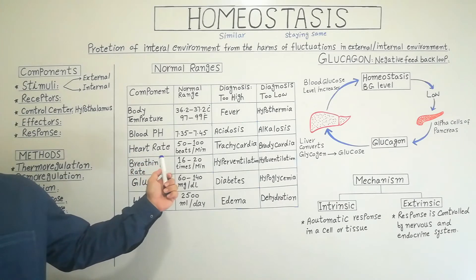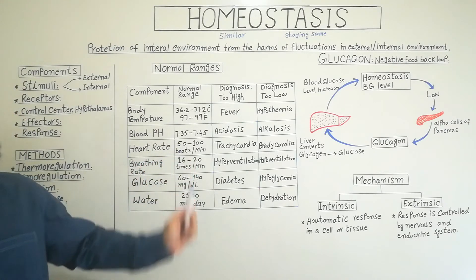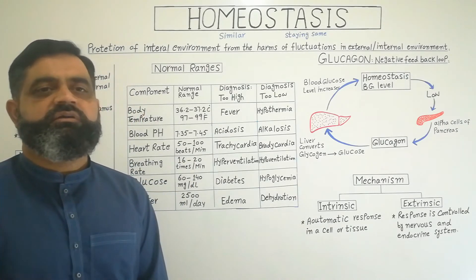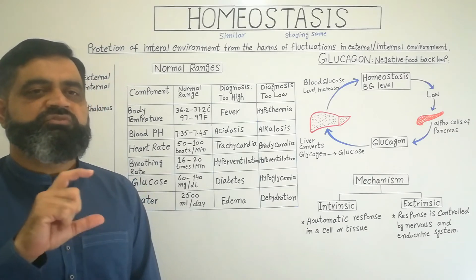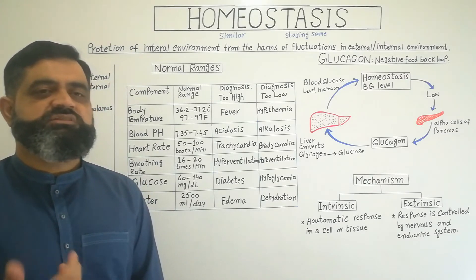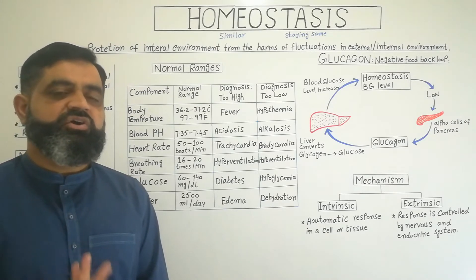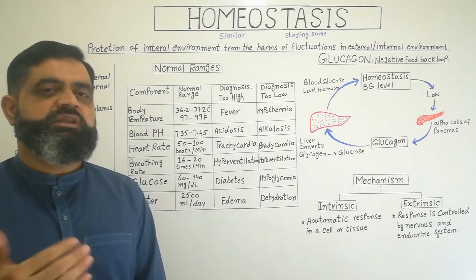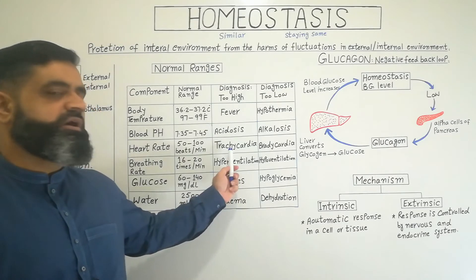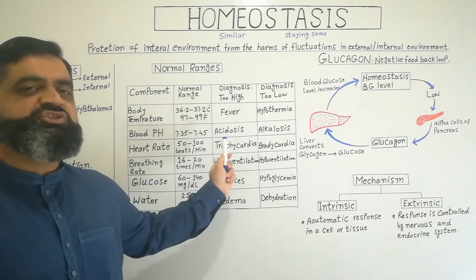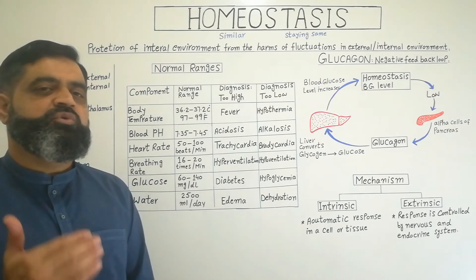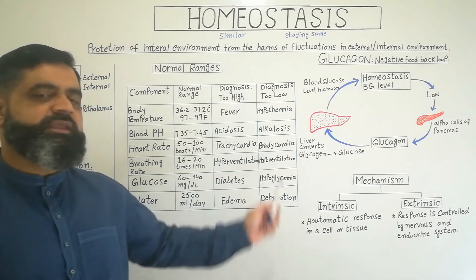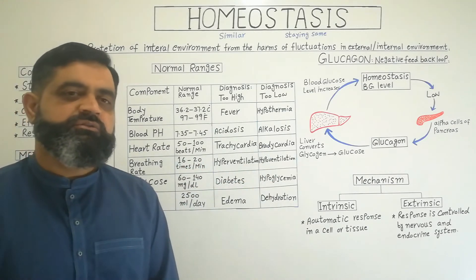Heart rate is also very important. Normal heart rate should be 50 to 100 beats per minute. Different age categories have different rates. Factors like fear, anxiety, depression, and disease can alter frequency. If heart rate persistently exceeds 100 beats per minute, it can cause tachycardia. If it falls below 50 beats per minute, it can cause bradycardia. Both conditions can lead to death.